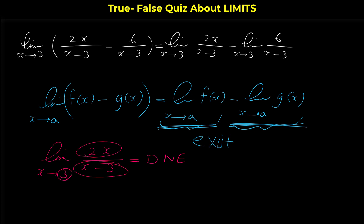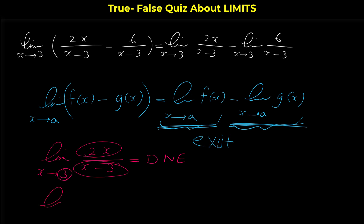As x approaches 3, the numerator approaches 6 and the denominator approaches 0. When we have a non-zero value over something that approaches 0, the limit does not exist — it goes to infinity or negative infinity. Similarly, the other limit, 6/(x-3) as x approaches 3, also doesn't exist since we again have a non-zero over 0.